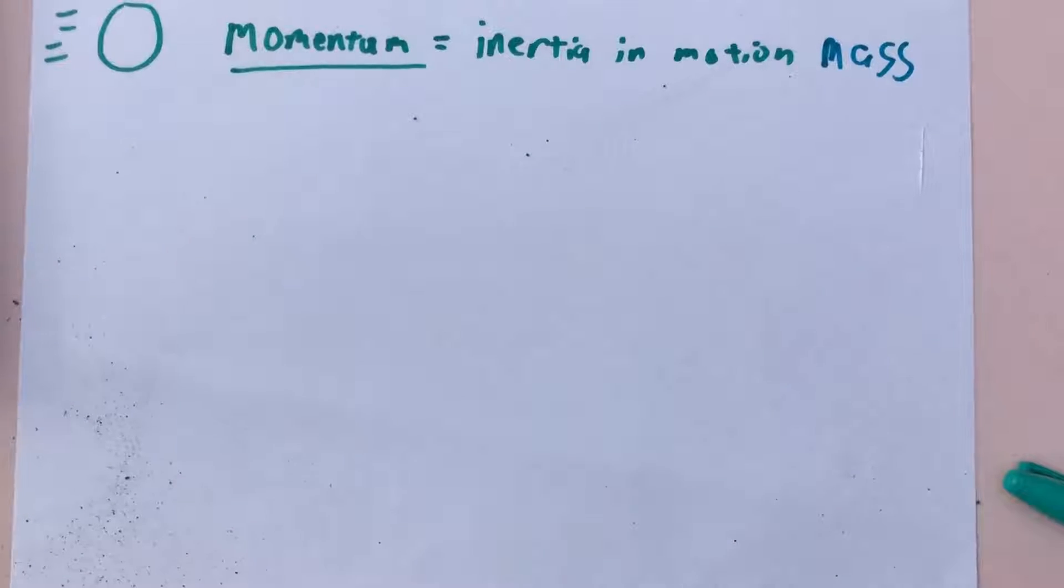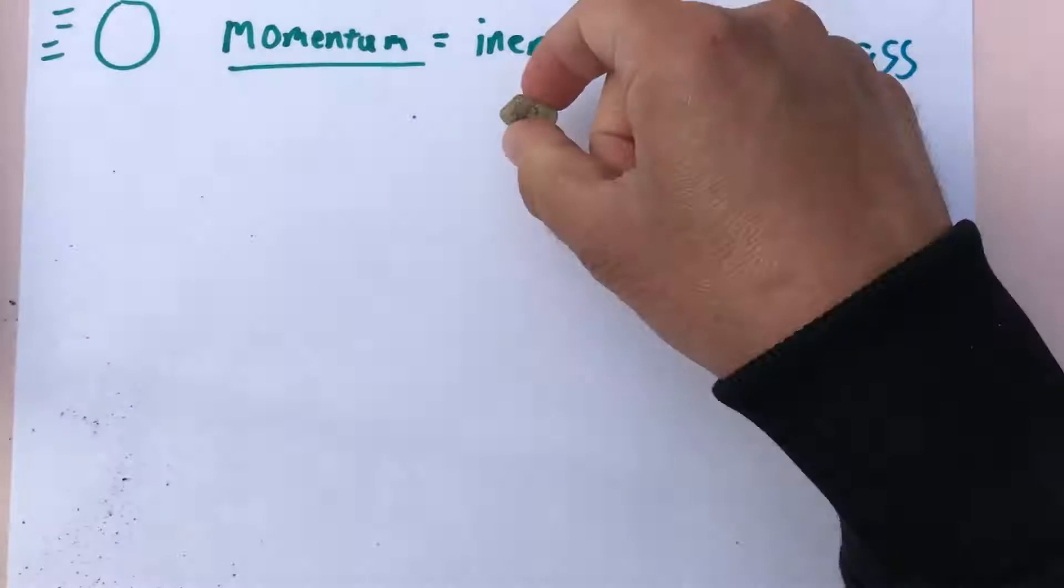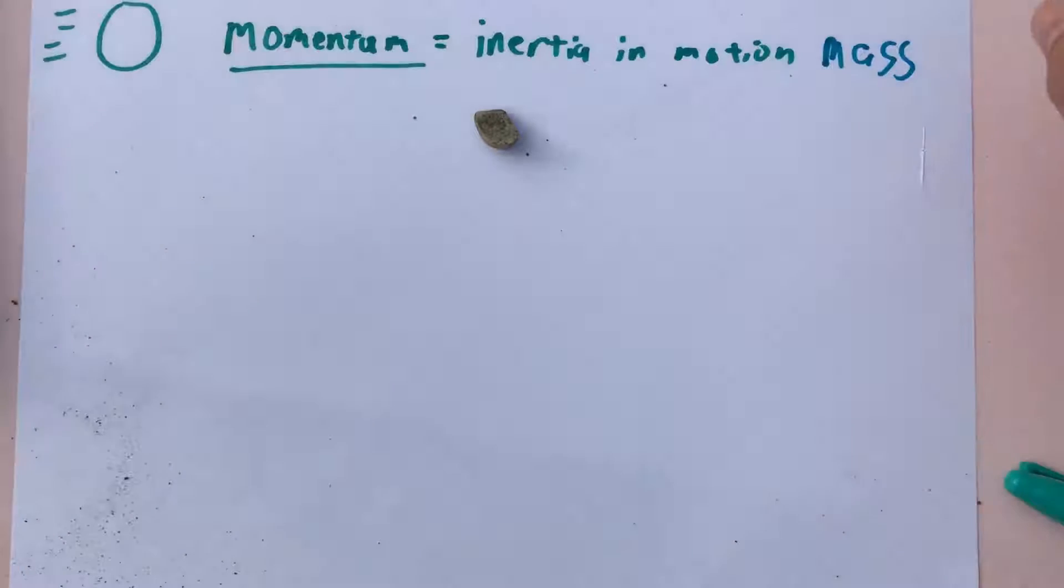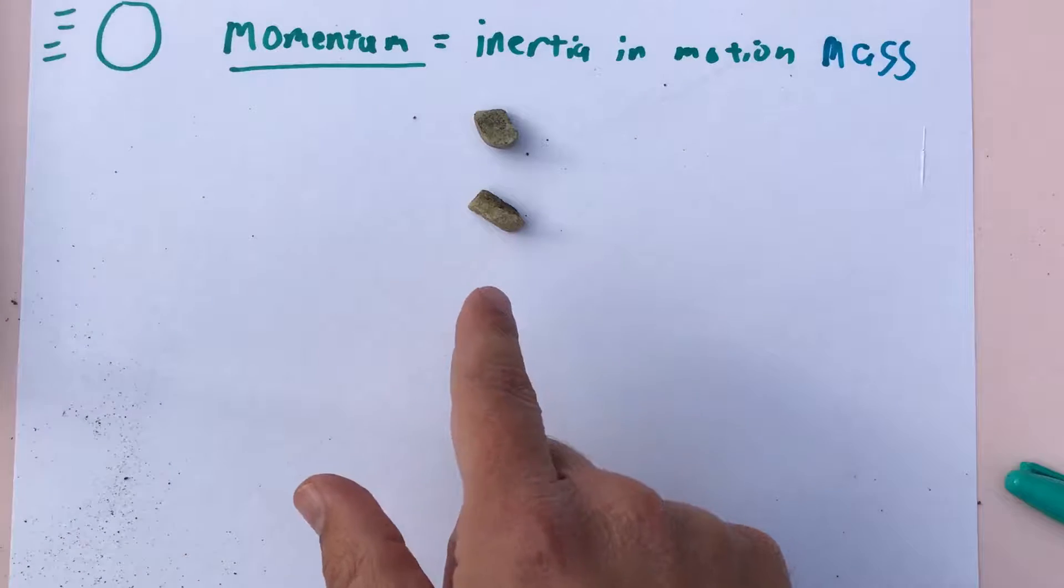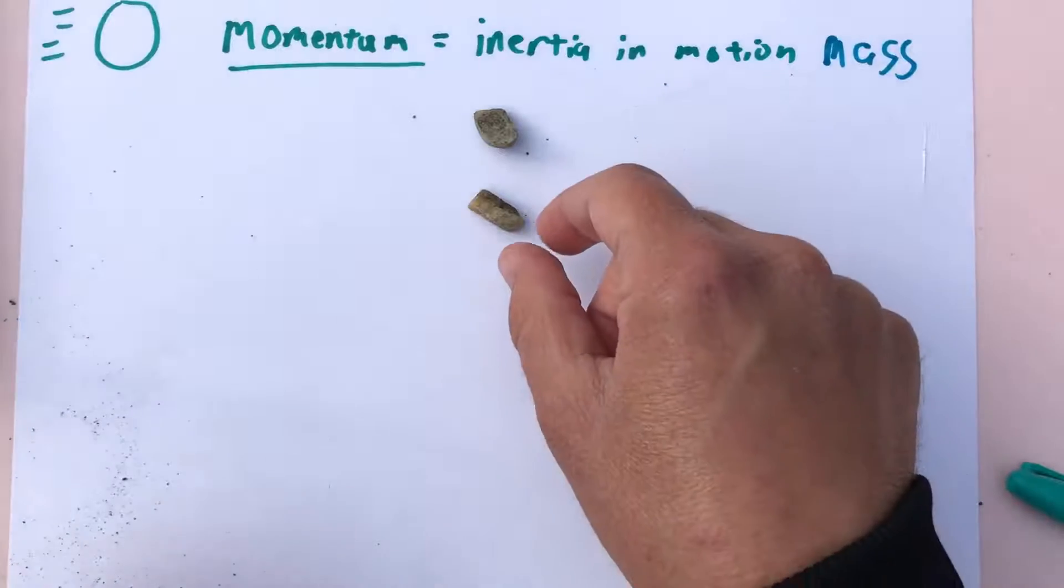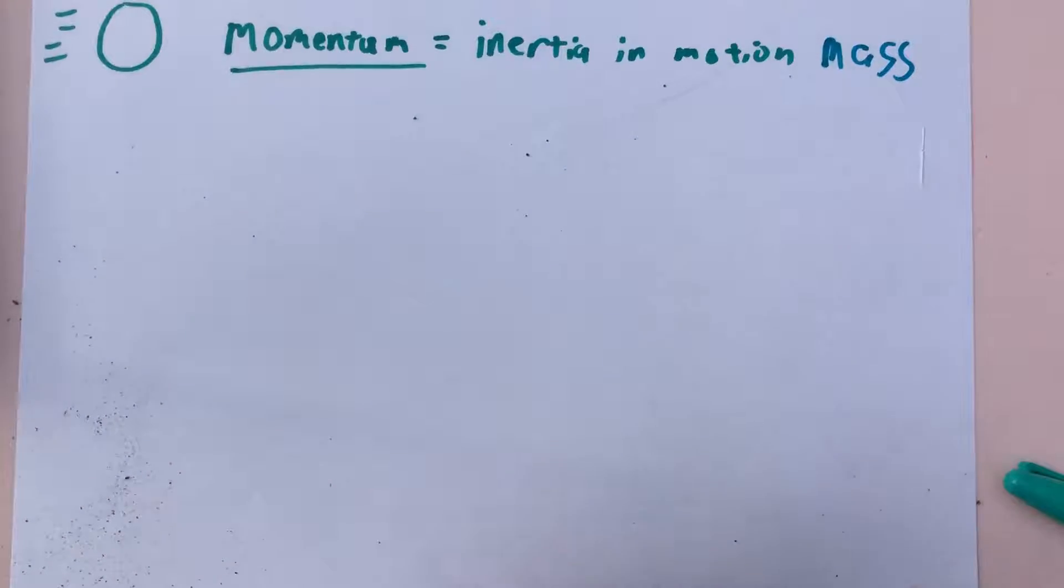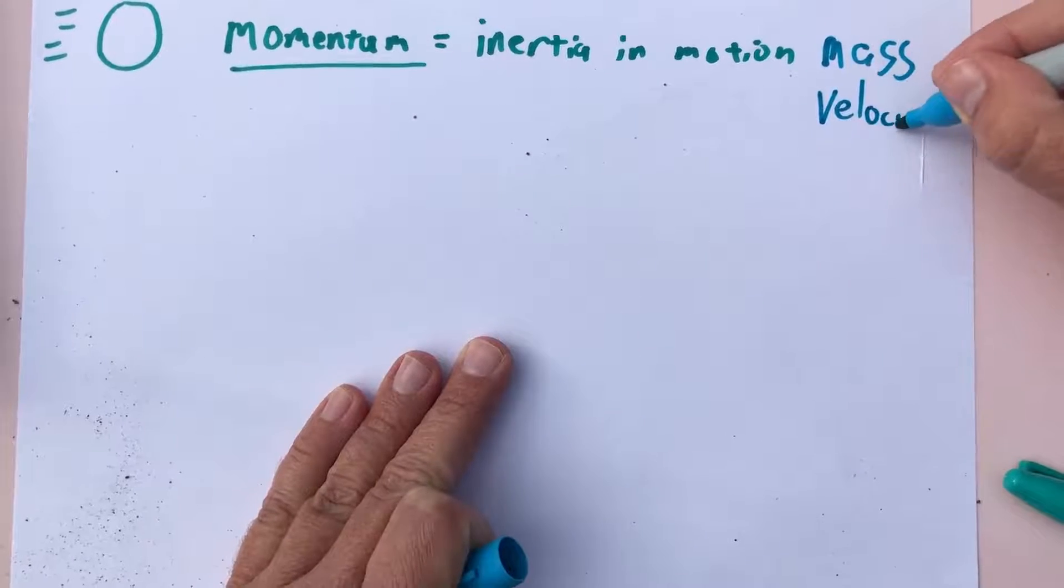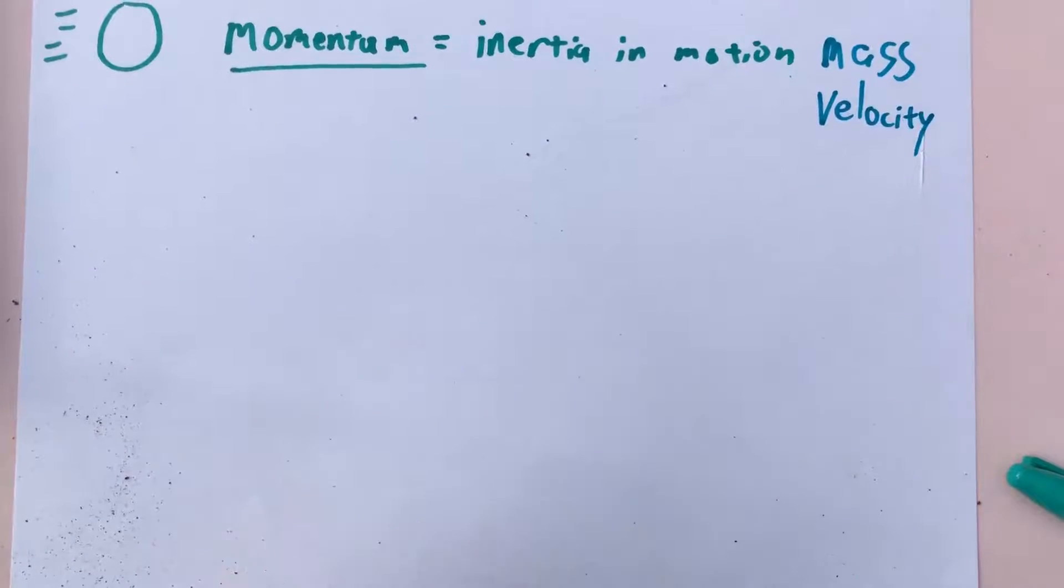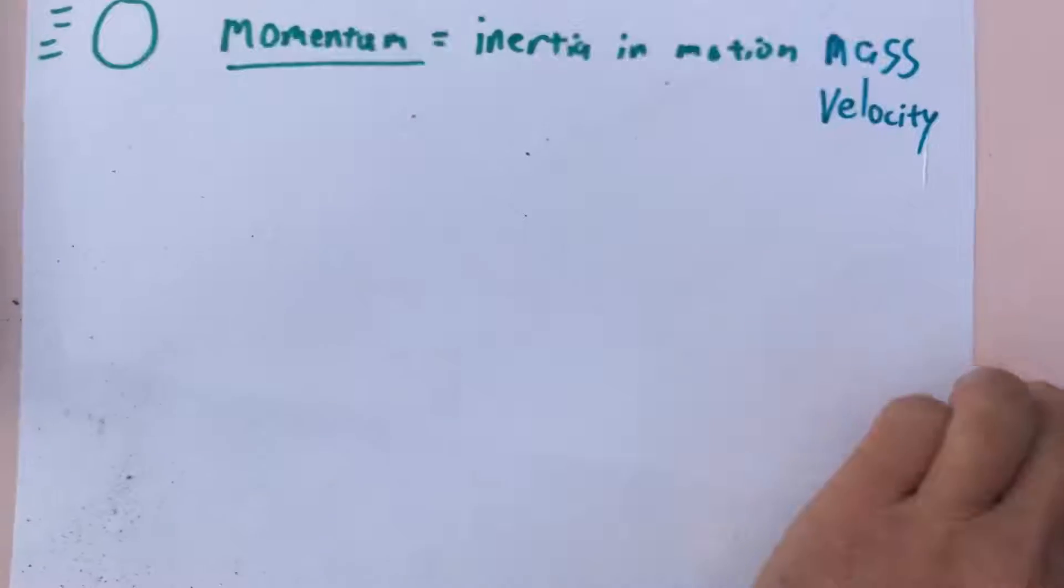The other thing that makes a difference is if I moderately threw a little pebble at you and I shot one out of a cannon, you would know that that one would be more dangerous to be in front of. So the other big thing that matters is the velocity. So the mass and the velocity are what matter for momentum.